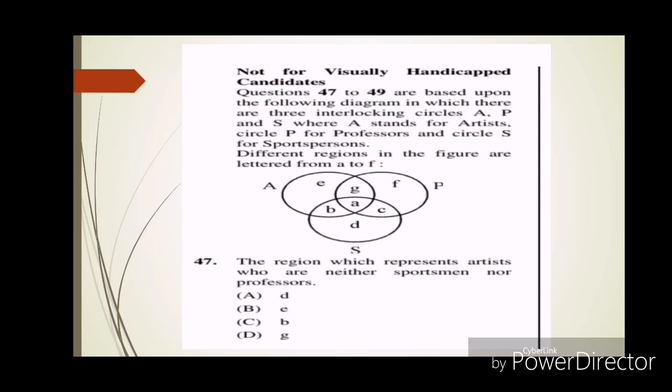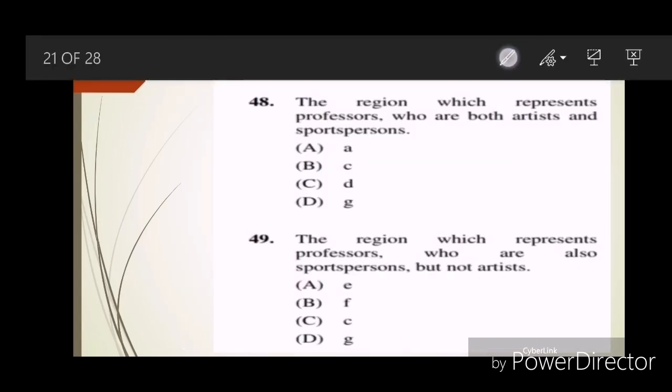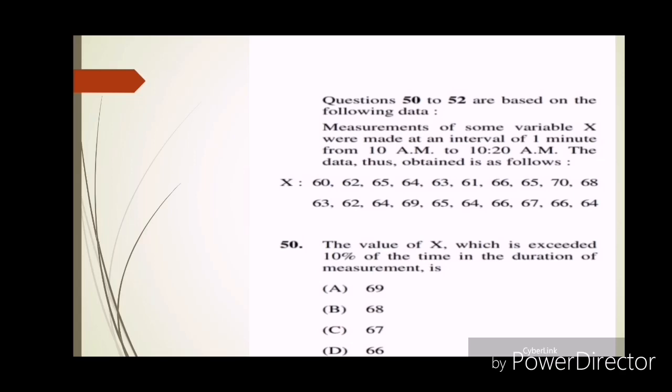Questions forty-seven to forty-nine are based on a diagram. Question forty-seven: The region which represents artists who are neither sportsmen nor professors? Answer is B, E. Question forty-eight: The region which represents professors who are both artists and sportspersons? Answer is A. Question forty-nine: The region which represents professors who are also sportspersons but not artists? Answer C.